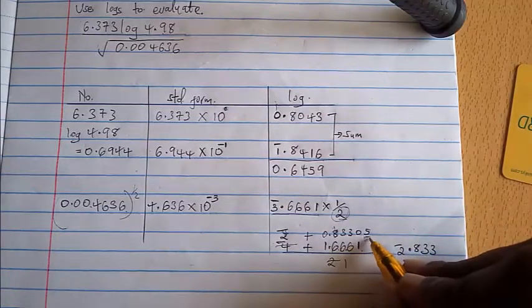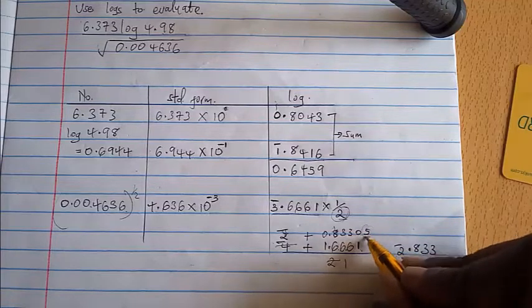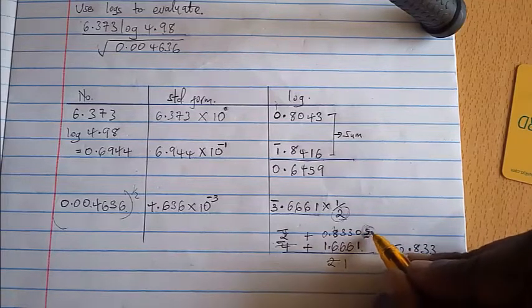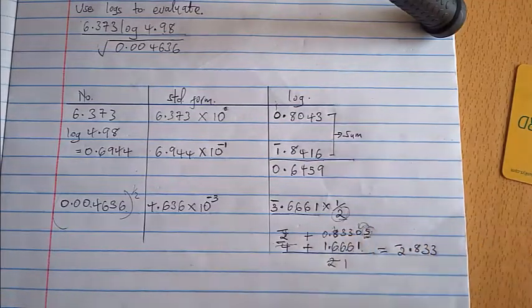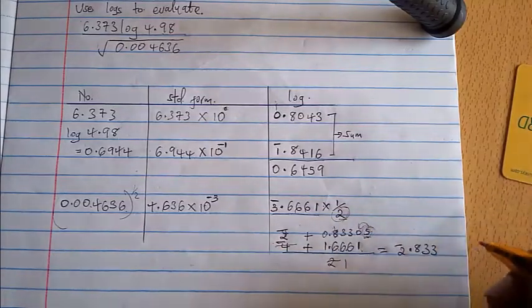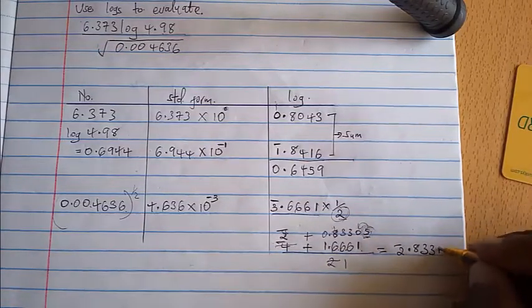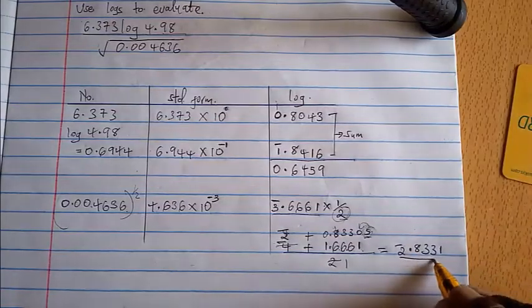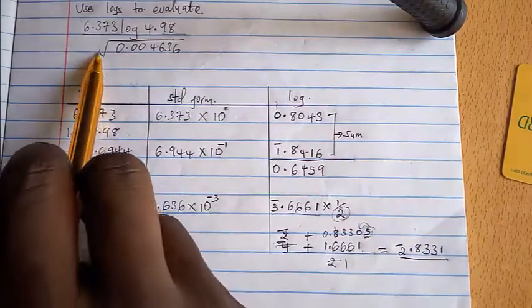From there now we combine these two and we'll be able to get bar 2.8331. Now because this 5 is, this number here is greater than 5, let me just round it off to five significant figures, so here will be 1.